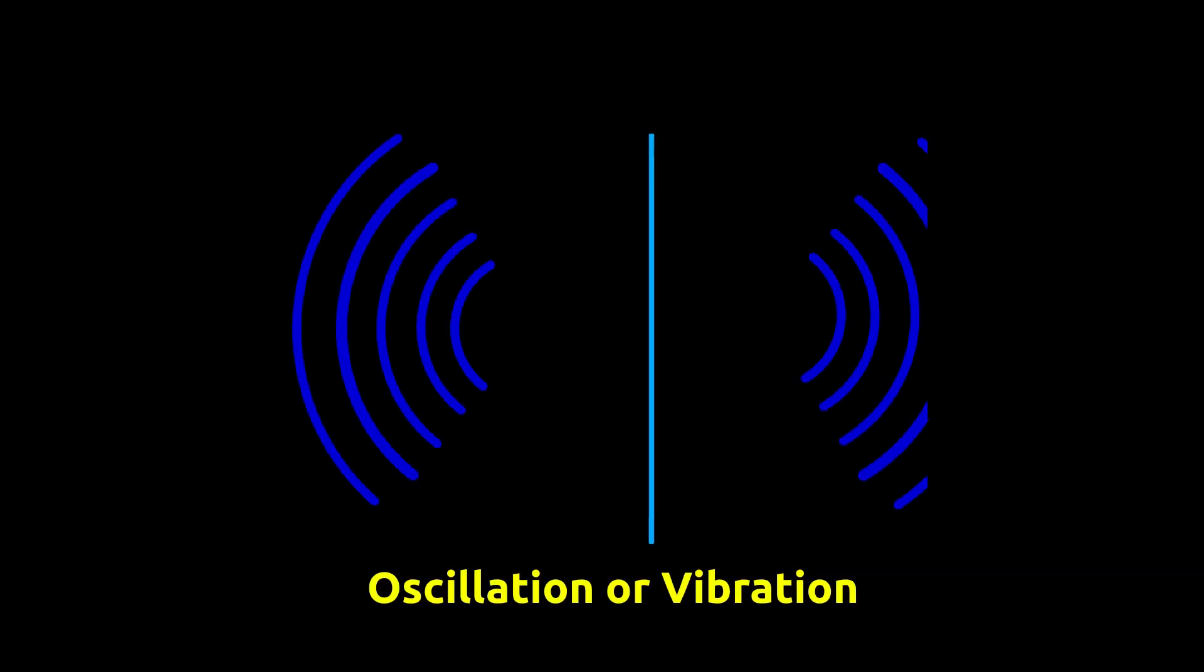Sound is produced by to and fro motion of objects. This motion is called vibration or oscillation.